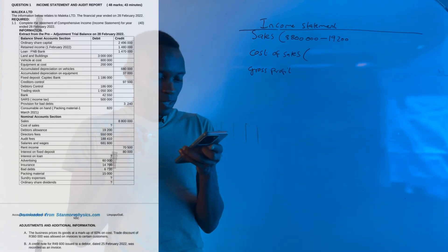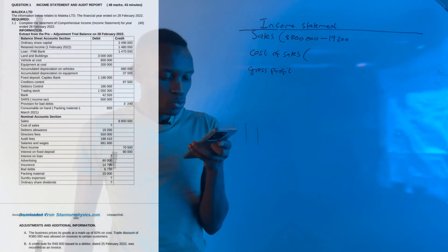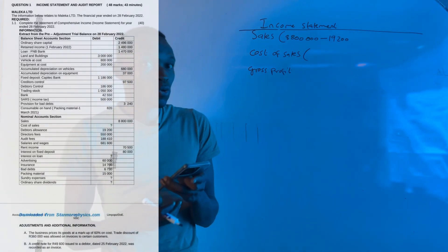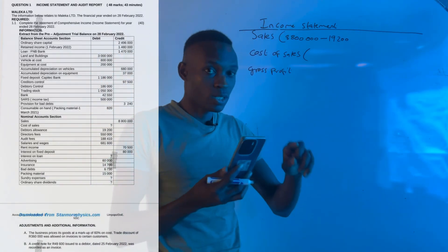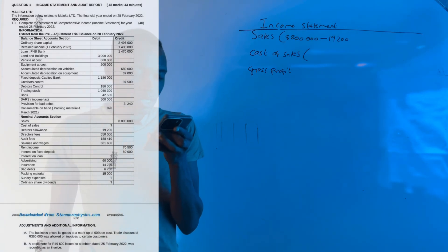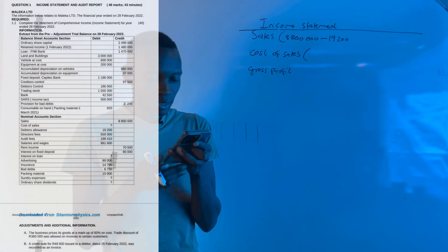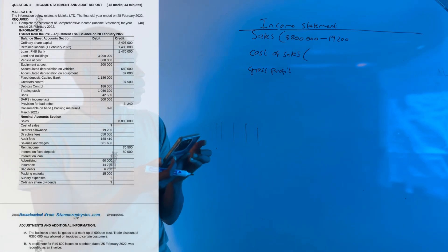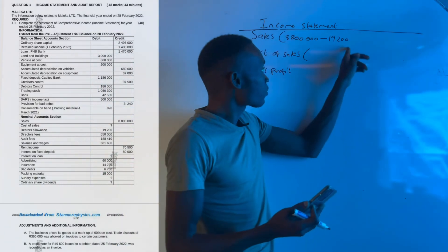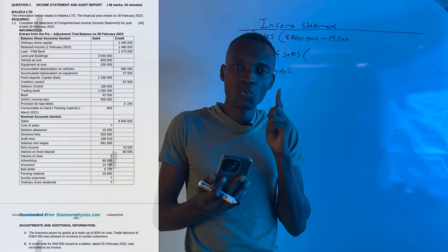We have to check information B: a credit note of 49,600 issued to a debtor dated 25 February 2022 was recorded as an invoice. In other words, a return was recorded as an invoice. Instead of subtracting, they added it, which means when we subtract, we're going to subtract double.